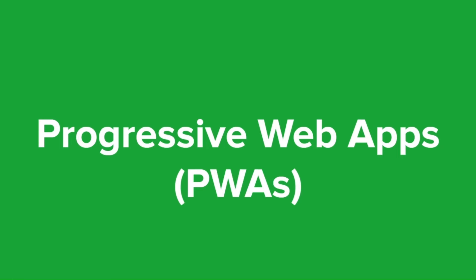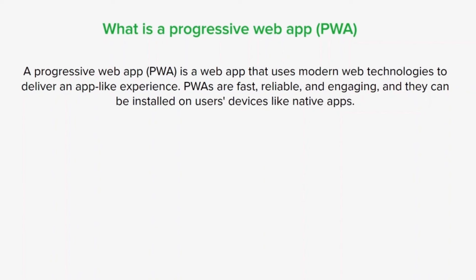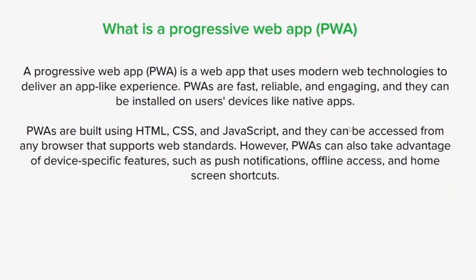Now let's talk about progressive web apps. Progressive web apps, or PWAs, are apps that offer native-like experiences even when accessed offline or on slow internet connections. They're becoming increasingly popular and we can expect them to become even more widespread in the future of web development. PWAs are built using HTML, CSS, and JavaScript and can be accessed from any browser that supports web standards. They can also take advantage of device-specific features like push notifications, offline access, and home screen shortcuts.